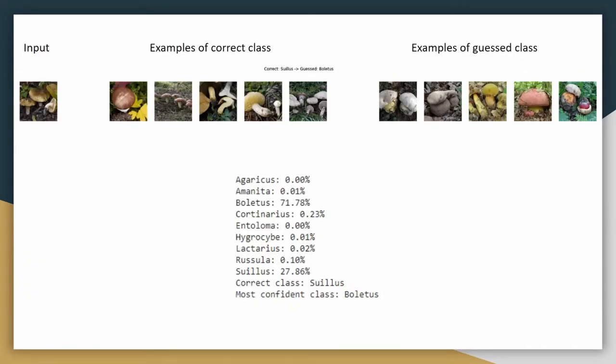But sometimes our model gets its prediction wrong. If we input the Suillus picture on the left, it predicts it as a Boletus. The two classes both have a very large cap, but the stalk on the Suillus is smaller. The image mostly shows in the center a very large cap, which might be why the model is more confident that it can be a Boletus more than a Suillus. Overall, this shows that our model is able to detect features.